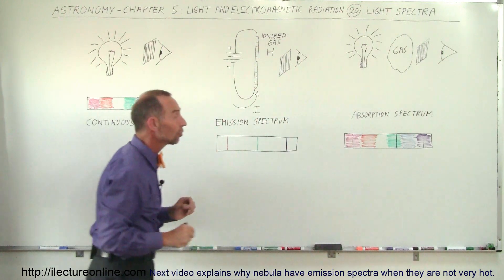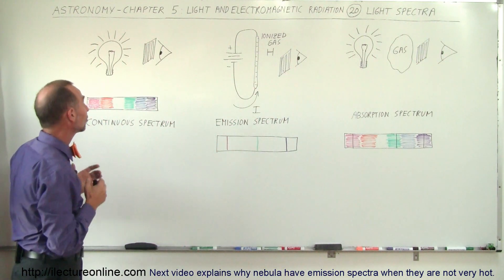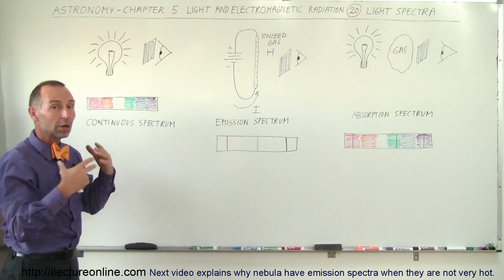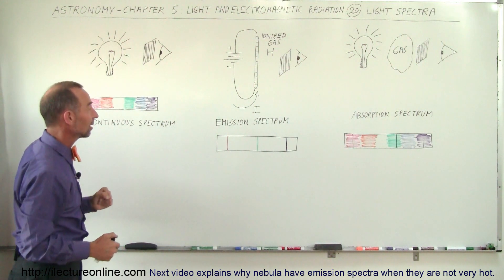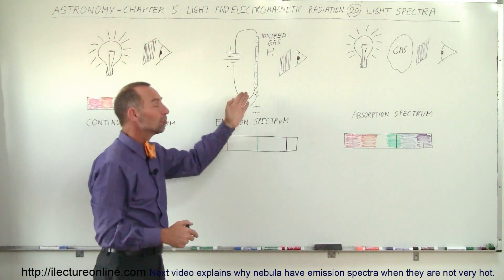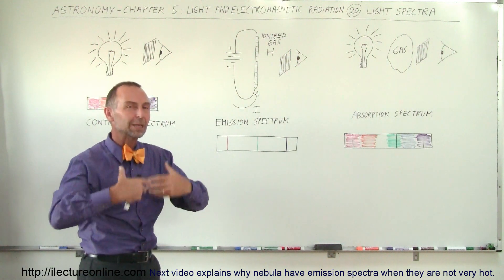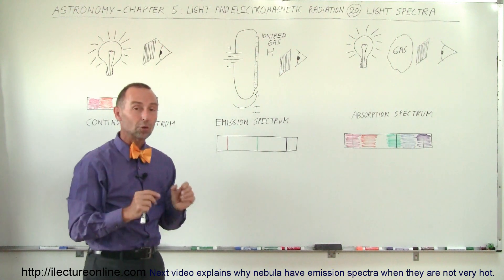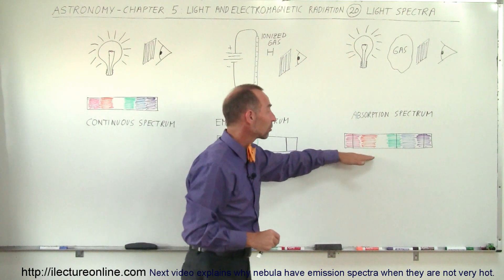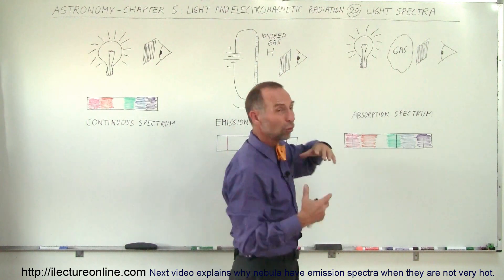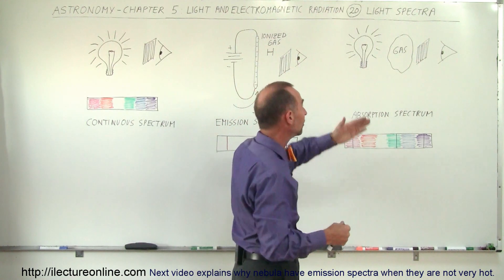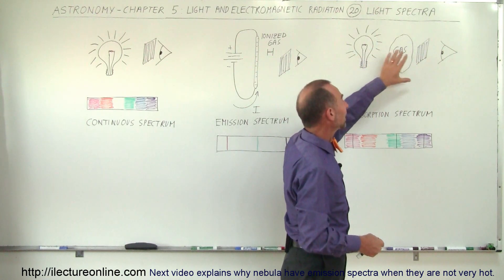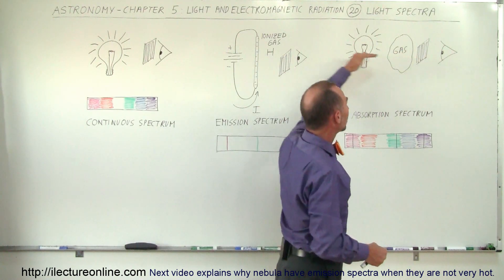You just have to realize that there are three different kinds of spectra: there's a continuous spectrum where you see all the colors of the rainbow continuously, like from an incandescent light bulb. We see an emission spectrum which usually comes from a gas that's been ionized and only gives light of very specific colors only. And then we have an absorption spectrum where a continuous source will have some of the light absorbed by the gas that intercedes.